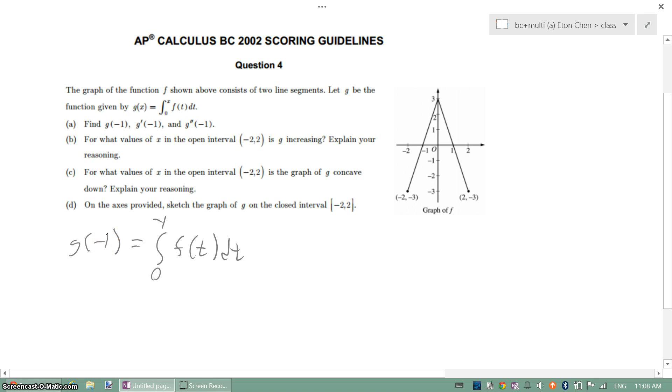Since we can't do from 0 to negative 1 because we're going negative directions, we can just flip this and put a negative sign in front. So it'll be from negative 1 to 0, same f(t) dt.